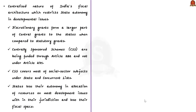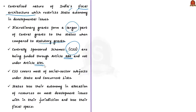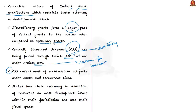The second issue is the centralized nature of India's fiscal architecture, which restricts state autonomy in developmental issues. Discretionary grants form a larger part of central grants to states compared to statutory grants, because centrally sponsored schemes are funded through Article 282 — which is discretionary — and not under Article 275, which requires a Finance Commission recommendation. These centrally sponsored schemes cover most social sector subjects under the state and concurrent list, causing states to lose their autonomy in resource allocation on most development issues within their jurisdiction.